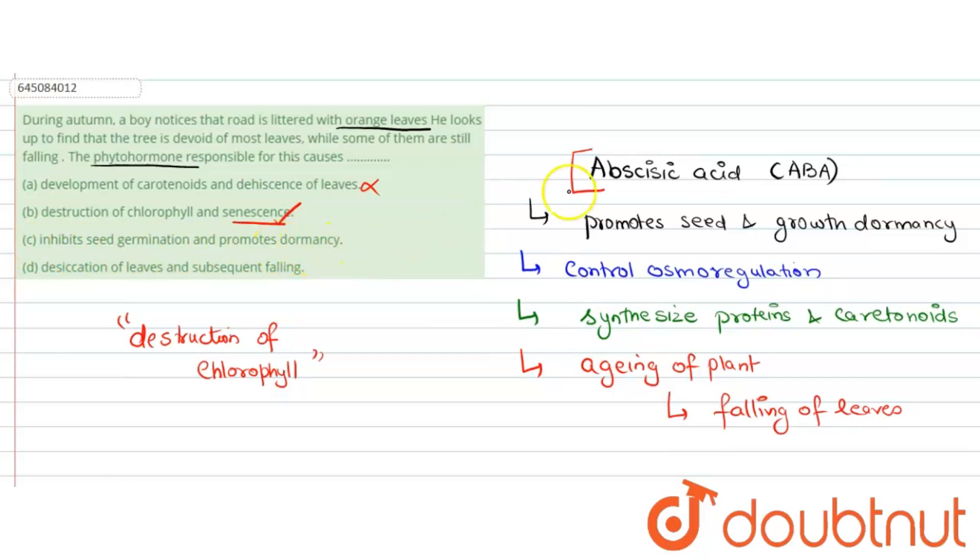Option D says desiccation of leaves and subsequent falling. Desiccation here means removal of moisture from the leaves and then subsequent fall, but this is not the correct reason according to our question, so this is also incorrect. Hence, we have our one correct answer, which is option B.